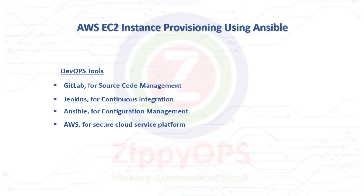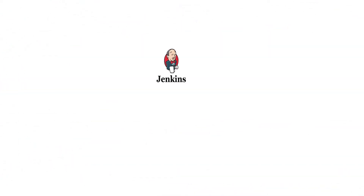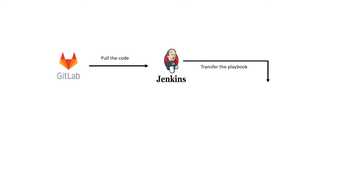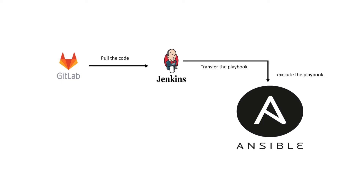Let's explore the workflow of AWS EC2 Instance Provisioning using Ansible, stage by stage. In the first stage, Jenkins's job will pull the AWS Provisioning Ansible Playbook from GitLab. In the next stage, Jenkins will transfer the Ansible Playbook to the Ansible Controller, which has instructions to provision AWS EC2, VPC, subnet, security group, internet gateway, and route tables.